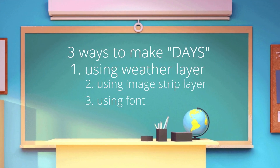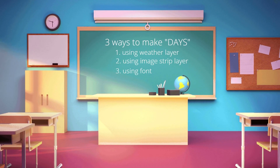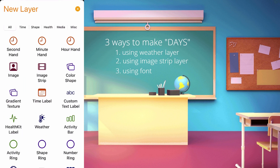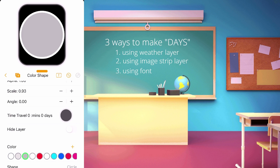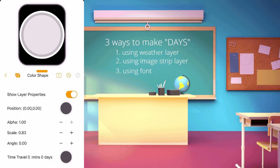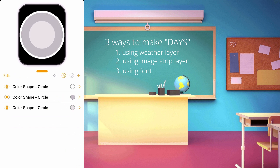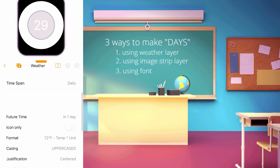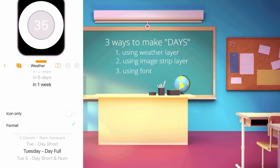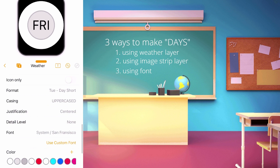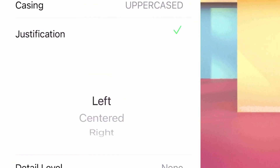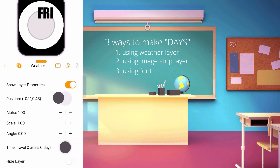Three ways to make days. The first way is using a weather layer. Using a weather layer is simple, but you need to be a Clockology Plus subscriber. To show you how to make this in Clockology, I will just make a big circle using a color shape. Then create a weather layer. Choose Daily for Time Span, choose one week for Future Time, and Day Short for Format. Choose a black color and bold font. Set the justification to Centered, because once the day changes, the spacing also changes, so it is better to choose Centered.